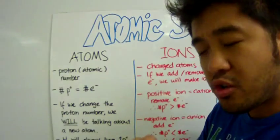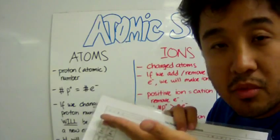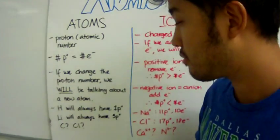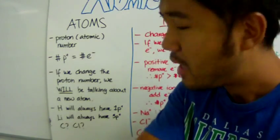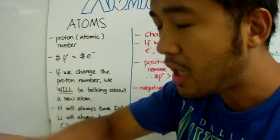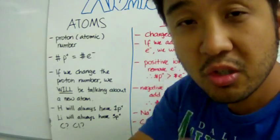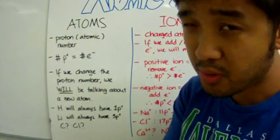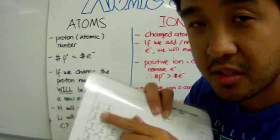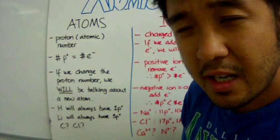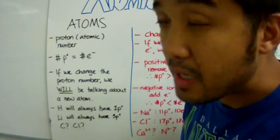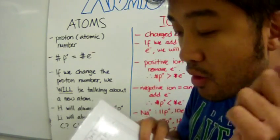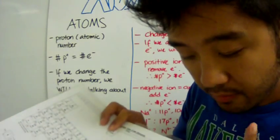So, when you change the proton number of a particular atom, you are making a new element, or a new atom. Let's take a look at hydrogen. We already know that hydrogen has one proton, and hydrogen will always have one proton no matter what. If you add or remove electrons, that thing will still be hydrogen. If you add or remove neutrons, that thing will still be hydrogen. What's the proton number of lithium? Take a look at a periodic table, and it says three. So, if we add or remove electrons or neutrons, that thing will still be lithium. But if we add protons to lithium, we will now make beryllium. And if we remove protons from lithium, what we will end up having is helium again.